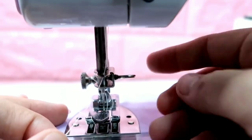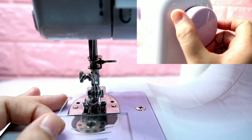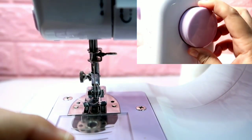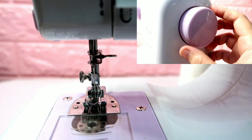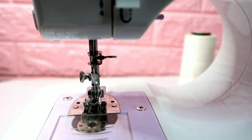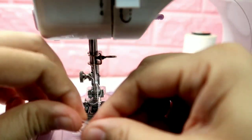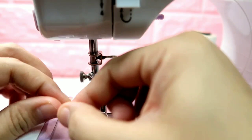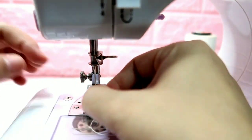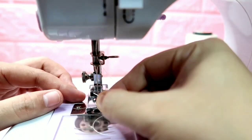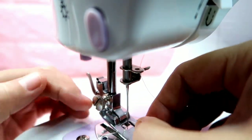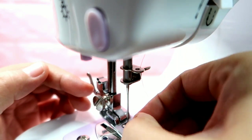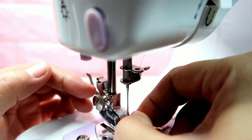Lastly, you can raise the hand wheel. You can turn it counterclockwise, just so it goes up. And then from front to back is how you position the thread.